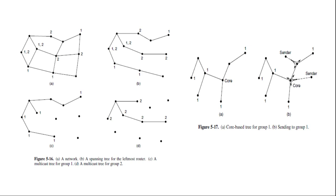Here in figure 5.17 A shows a core-based tree for group 1. To send to this group, a sender sends a packet to the core.